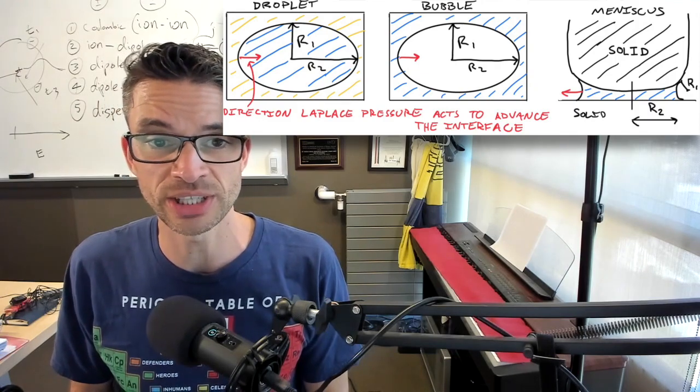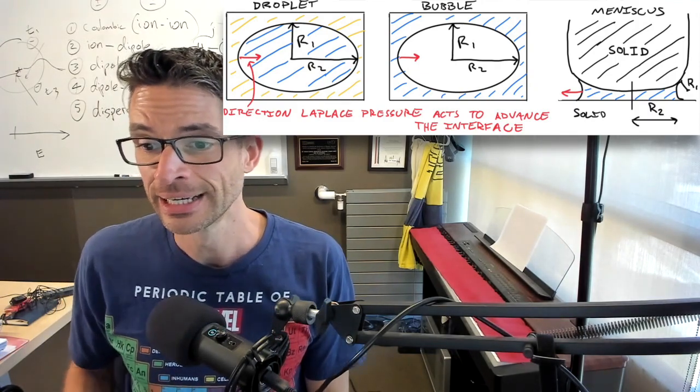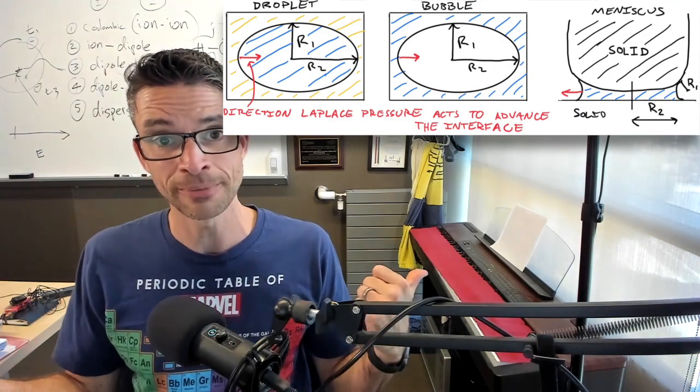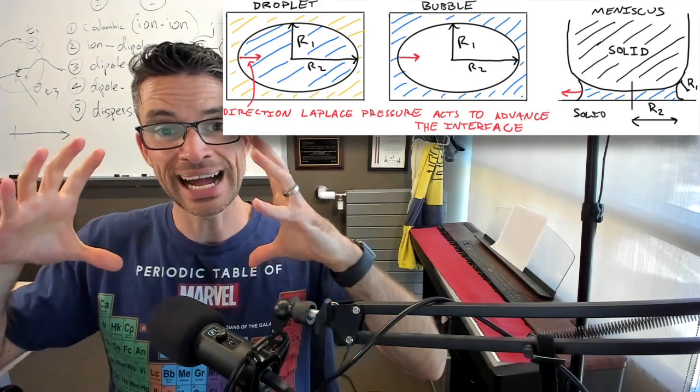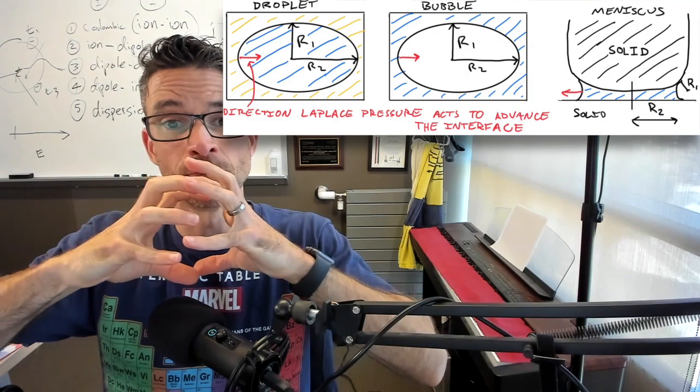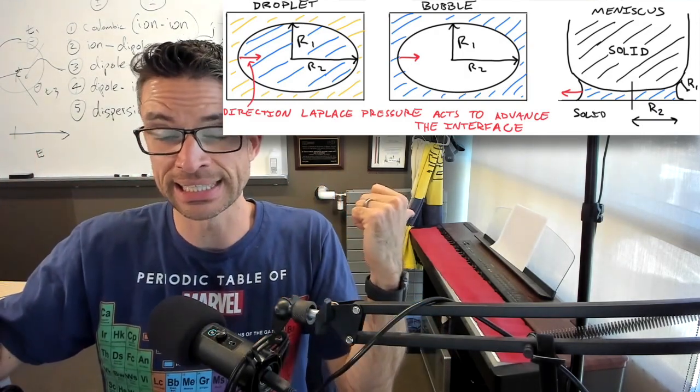A meniscus is a liquid bridge that's almost like an inverse bubble. So in this case, the concave surface of the meniscus points out. And the Laplace pressure always acts to advance this surface or compress the surface in the case of a bubble or droplet or expand the surface in the case of a meniscus